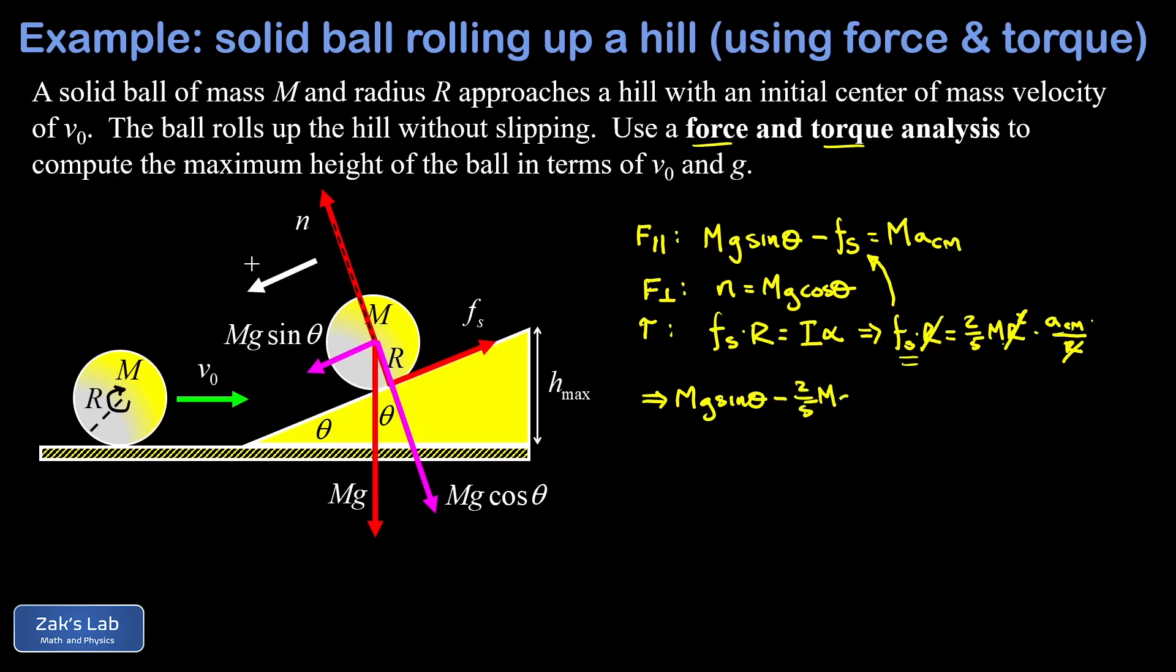So an M cancels out of this. Apparently the mass of the ball doesn't matter. And I'm going to get those a center of mass terms gathered on the right hand side, so I have one of those plus 2/5 more, and that gives me 7/5 a center of mass.